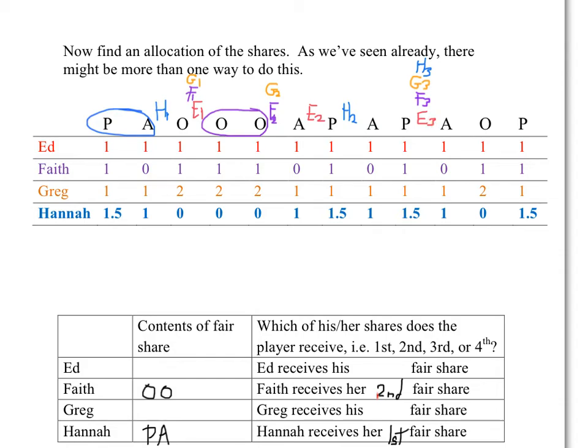So let's flip a coin, and suppose that Greg wins the coin flip. Greg will get his third fair share, everything between G2 and G3, namely apple, pear, apple, pear. We record that here, and note that it is his third fair share.